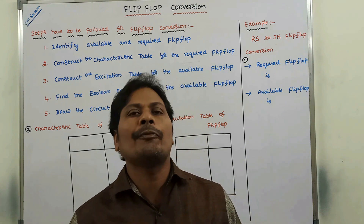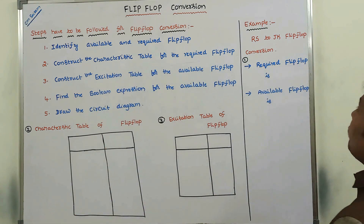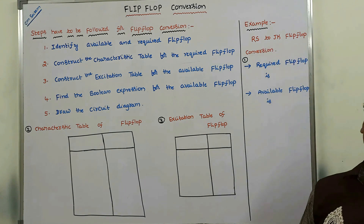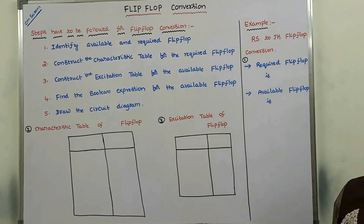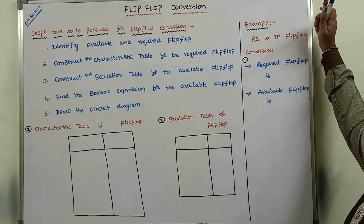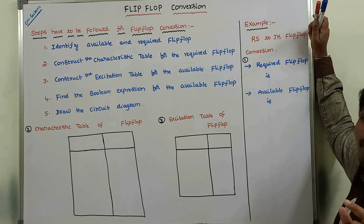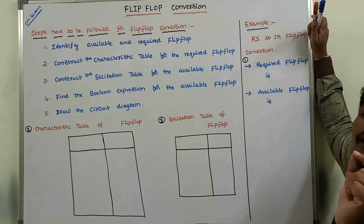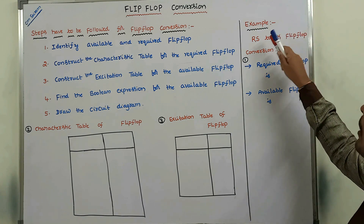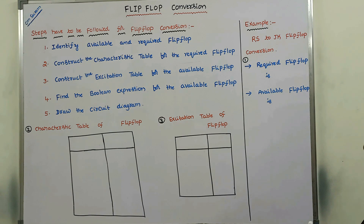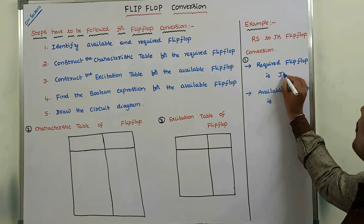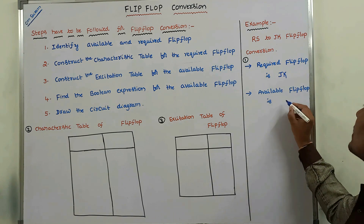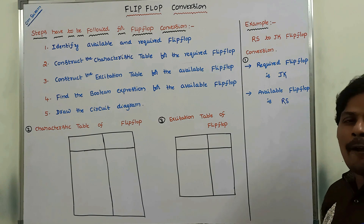Now we can go for one example: convert RS flip-flop to JK flip-flop. So this is our problem statement. The first step is to identify the required flip-flop and available flip-flop. Among these two flip-flops, the required flip-flop is JK flip-flop and the available flip-flop is RS flip-flop.